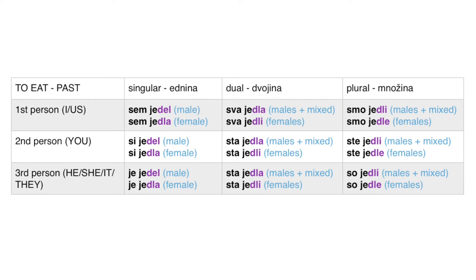First person dual is 'sva jedla' for two males or a mixed couple, or 'sva jedli' for two females. Second person dual is 'sta jedla' for males or mixed, and 'sta jedli' for two females. Third person dual is 'sta jedla' for male or mixed, and 'sta jedli' for females. First person plural is 'smo jedli' for males or mixed, or 'smo jedle' for females. Second person plural is 'ste jedli' or 'ste jedle', and third person plural is 'so jedli' or 'so jedle'.